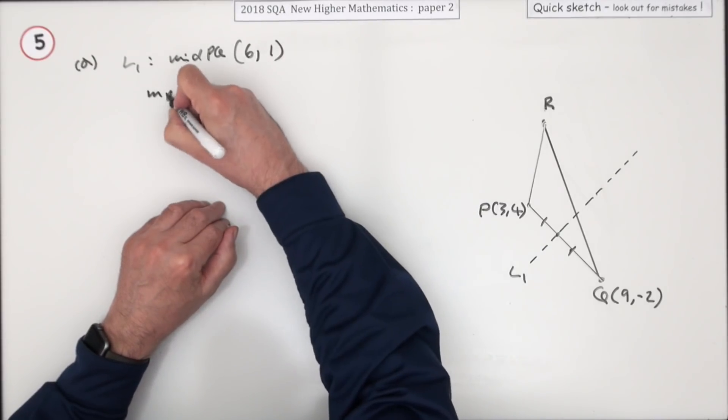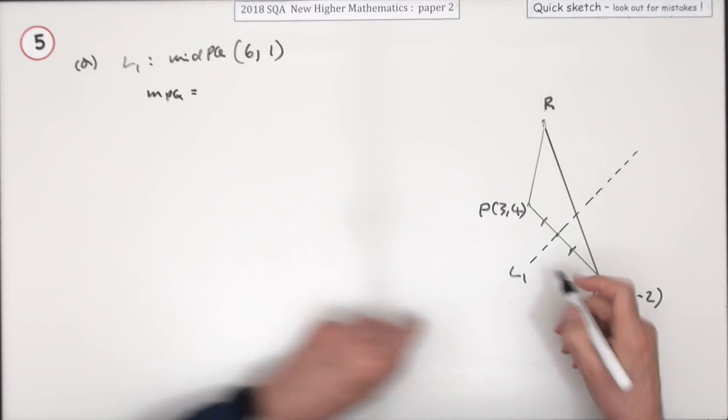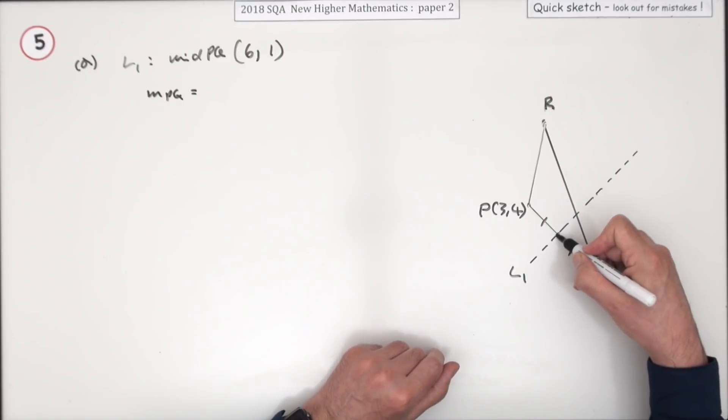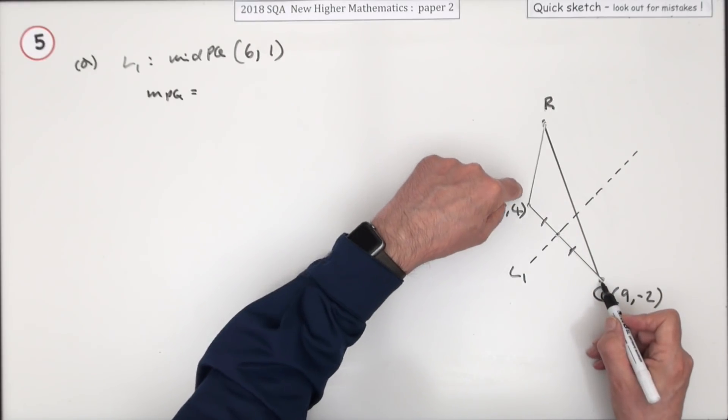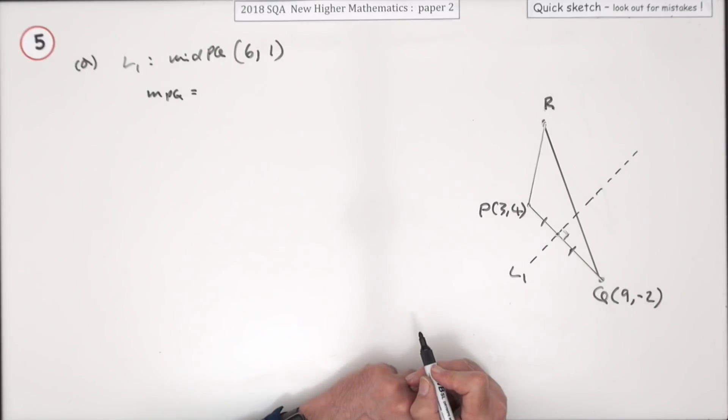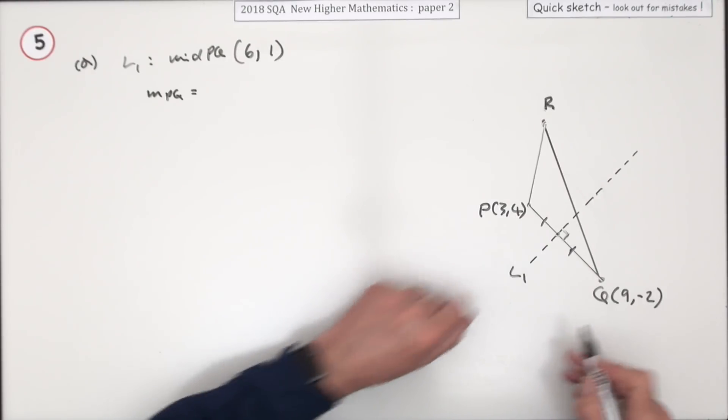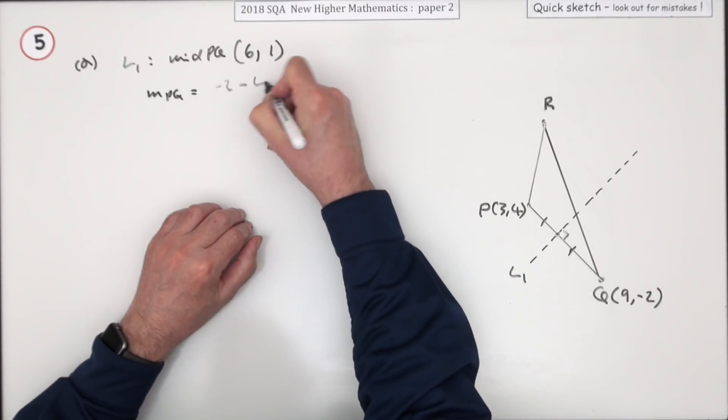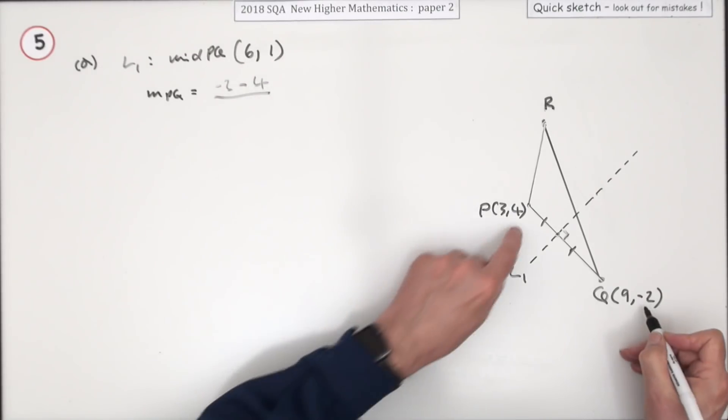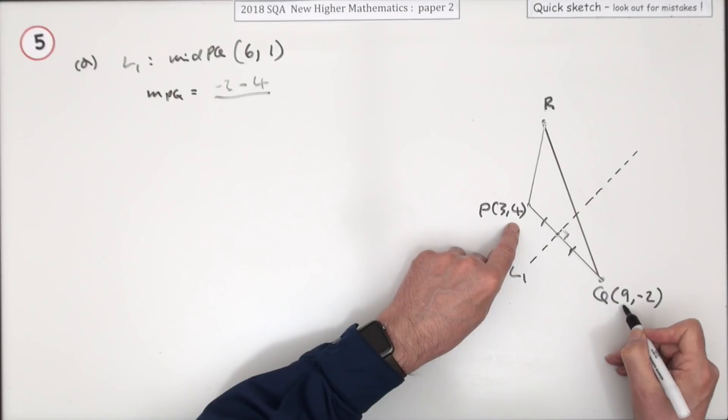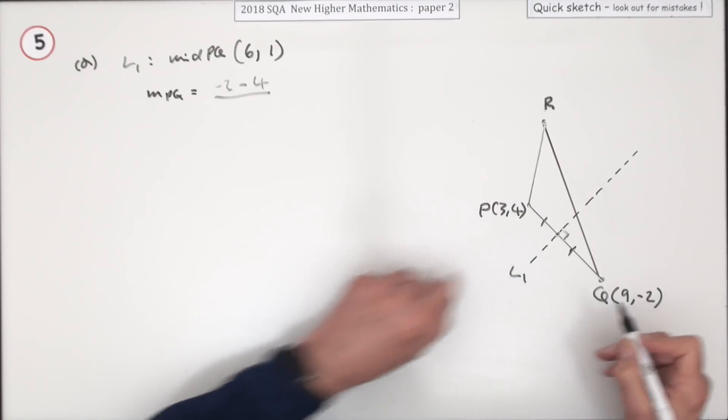The other thing you'll need is the gradient. Well you can't get the gradient of the line because you've only got one point on it, but you can get the gradient of the perpendicular line because it's the perpendicular bisector. So what's the gradient of PQ? Difference in the y coordinates: negative 2 take away 4, difference in the x coordinates: 9 take away 3.